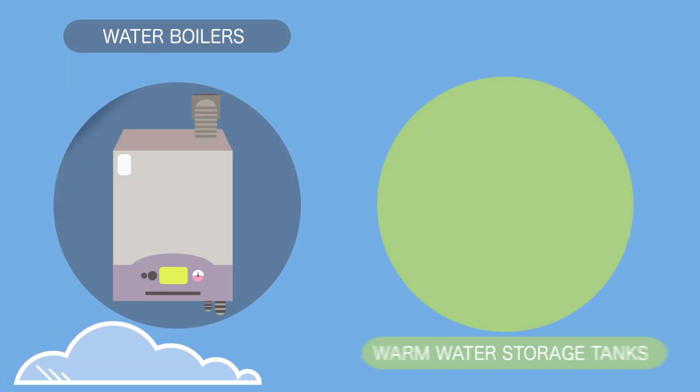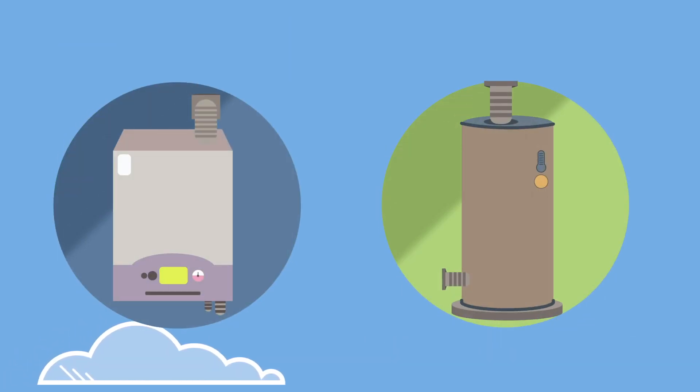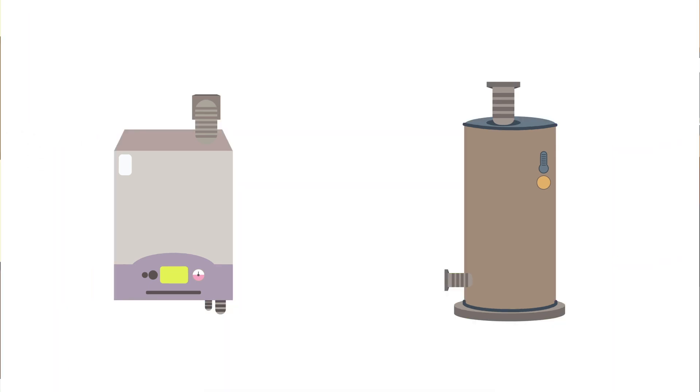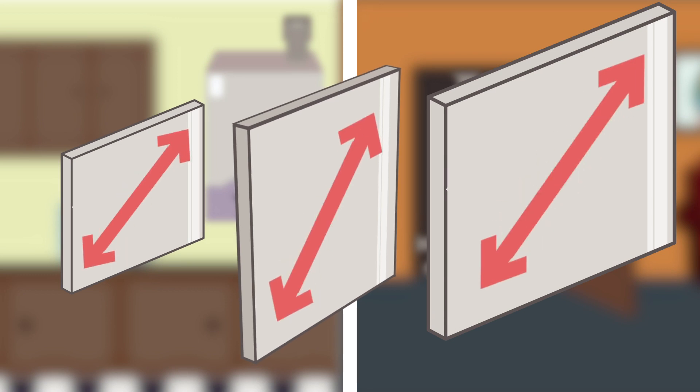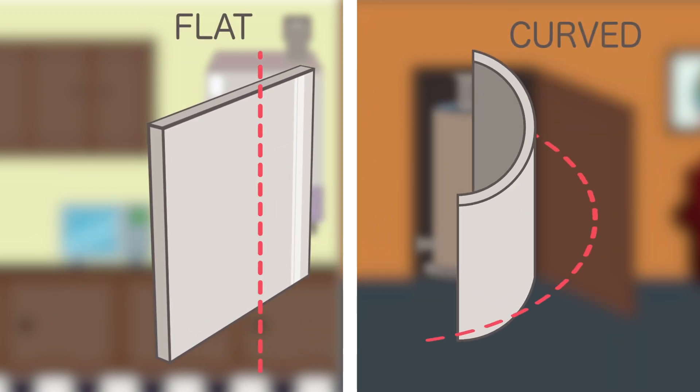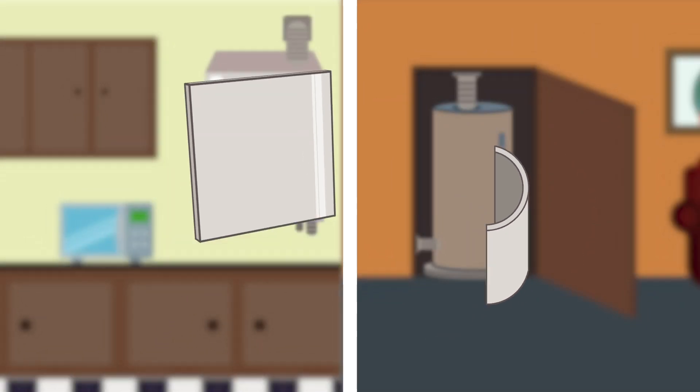VIPs are also used in water boilers and warm water storage tanks. The use of VIPs in household appliances brings a number of benefits. VIP panels are very flexible in sizes and typically available in flat or curved shapes to meet most appliance dimensions.